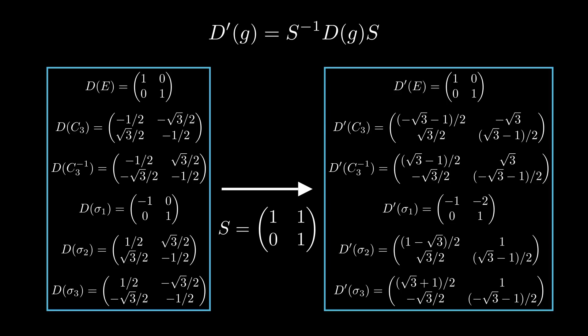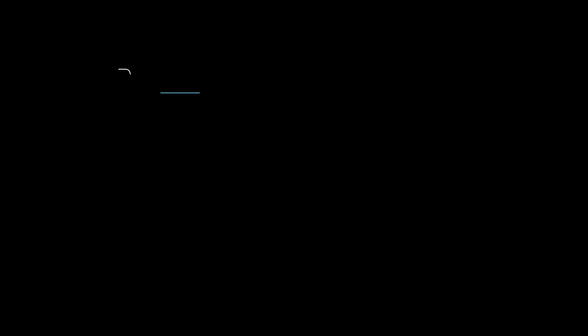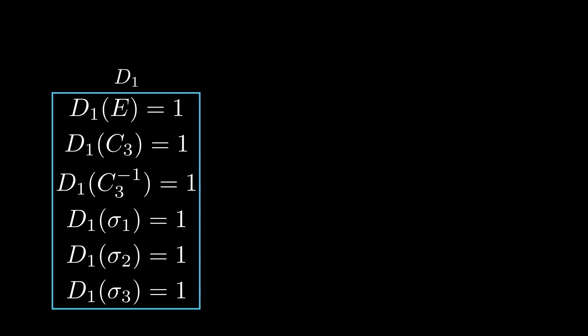These representations, which are not reducible, are called irreducible, and play a very important role in our theory. An important result is that there only exist a few non-equivalent irreducible representations of a finite group. For any group, we always have the trivial 1D representation, where each group element is associated to the number 1.